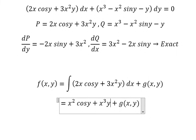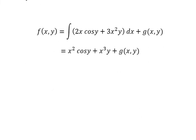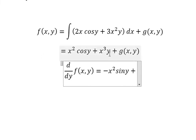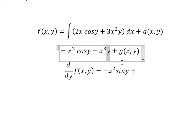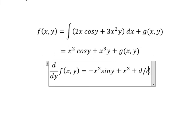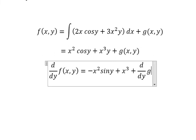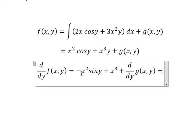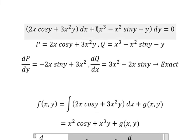Next we need to do the first derivative of f with respect to y. So this one we have negative x² sin y, this one we have x³, this one we have 1, plus the derivative of g(x,y) with respect to y. And we know that this one equals to Q, which is x³ - x² sin y - y.